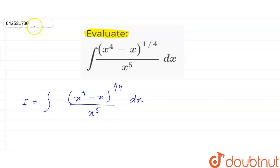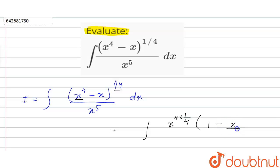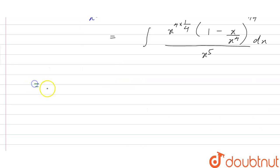If we take x raised to power 4 outside, we have left with the integral of x raised to power 4 into 1 by 4, because we have this whole power, and we have left with 1 minus x upon x raised to power 4, whole power 1 by 4, and in the denominator we have x raised to power 5, dx.